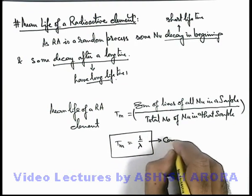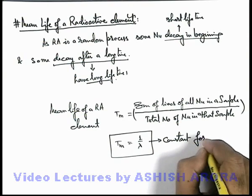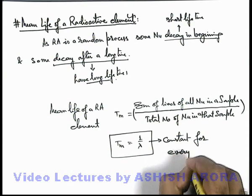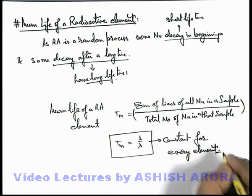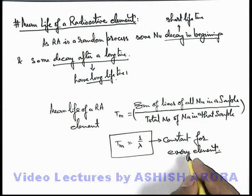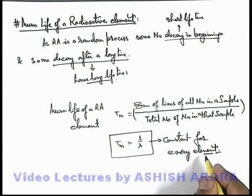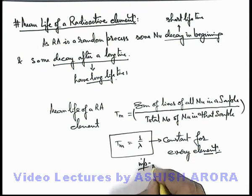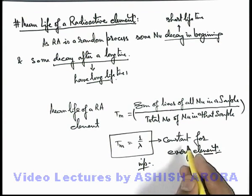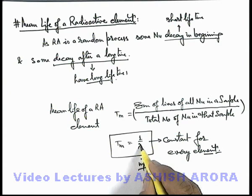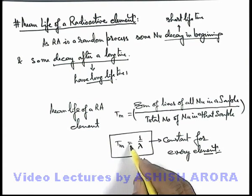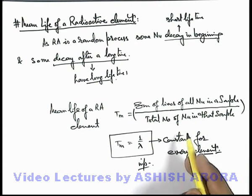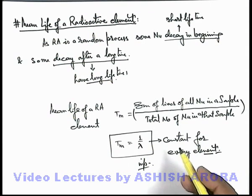This mean life is a constant for every element, but it will be different for every element — constant for each element but different for different elements. This is quite an important term, as it gives us the idea about the stability of a nucleus. If lambda is low, the value of mean life is high, meaning most nuclei in the sample have a large lifetime, so the nucleus is relatively stable, and vice versa.